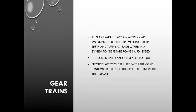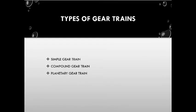Next is gear train. A gear train is two or more gears working together by meshing their teeth and turning each other in a system to generate power and speed. It reduces speed and increases torque. Electric motors are used with gear systems to reduce speed and increase torque. Types of gear trains: the first one is simple gear train, the second is compound gear train, and the third is planetary gear train, also known as epicyclic gear train.